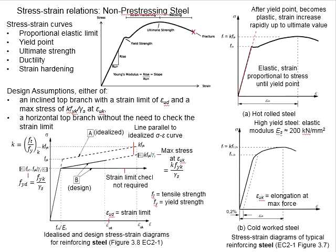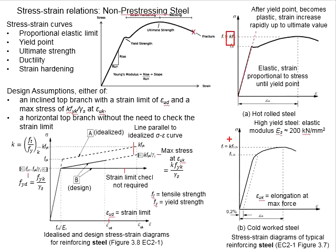In the definitions of the Eurocode, the U-point is determined by FyK or F0.2K. The K here represents the characteristic strength with at least a 95% confidence level. The ultimate stress of the steel in Eurocode is determined by a ratio K times the U-point, where K is the ratio of the ultimate tensile strength divided by the U-strength.